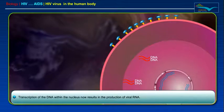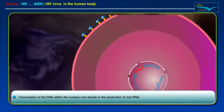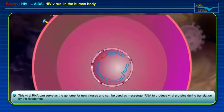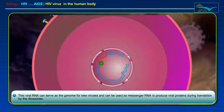Transcription of the DNA within the nucleus now results in the production of viral RNA. This viral RNA can serve as the genome for new viruses and can be used as messenger RNA to produce viral proteins during translation by the ribosomes.